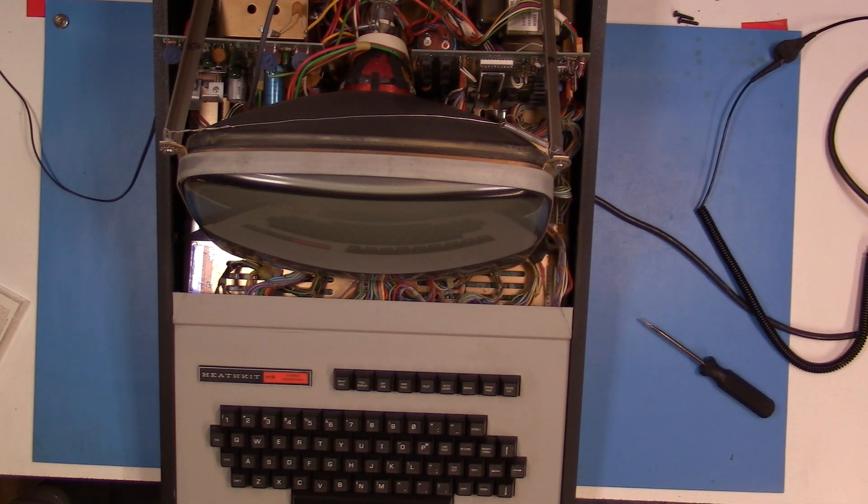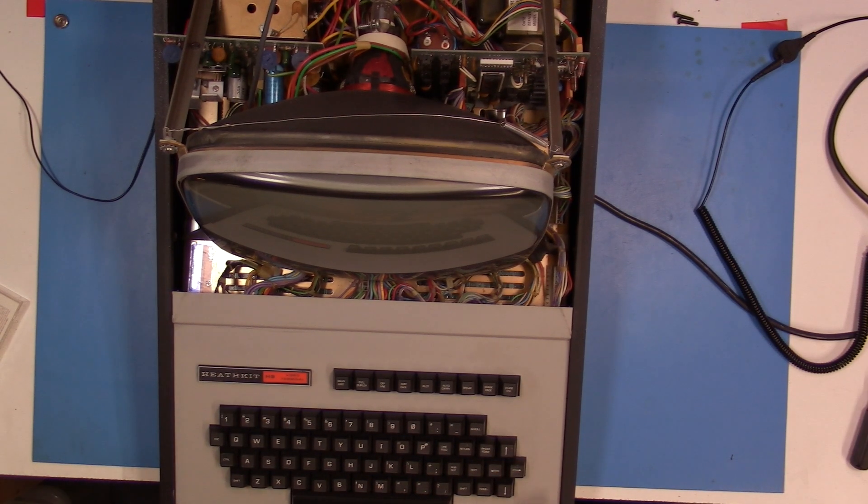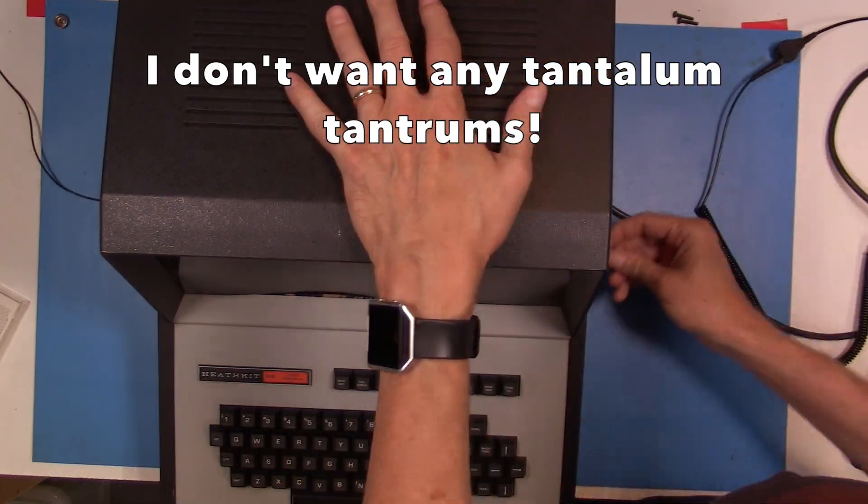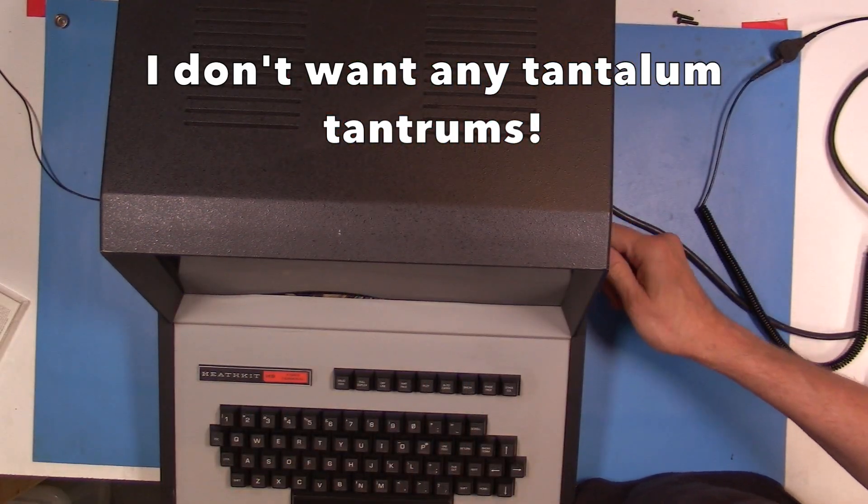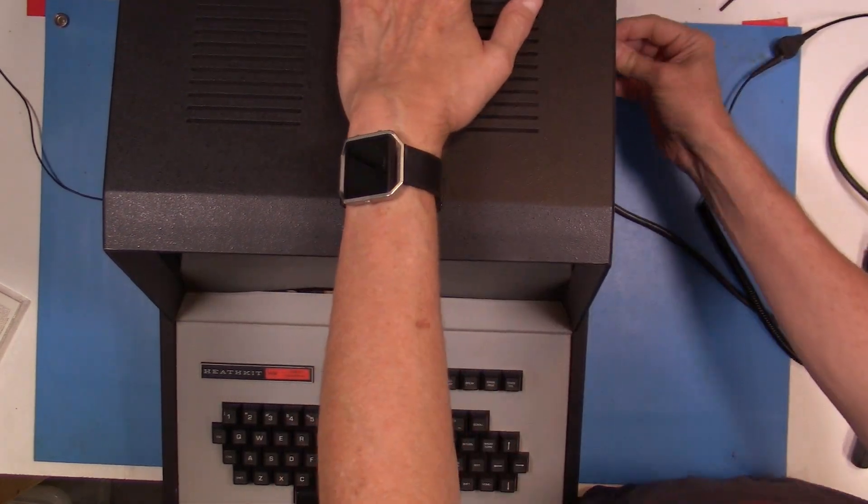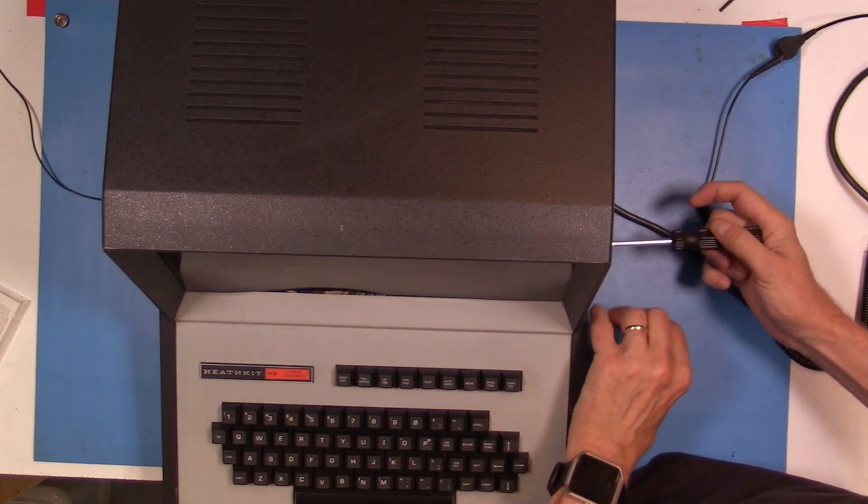One concern that I do have is I see a bunch of the little blue tantalum capacitors on some of the boards. I haven't even looked at the boards underneath on the bottom side of the unit but I can see from the manual that there's also tantalums there. But on the H8 there were tantalums throughout the system, there were some small green ones and then there was kind of a lighter voltage blue one that was in one place and that one popped when I brought power up to the system.